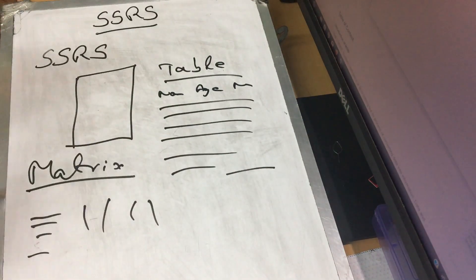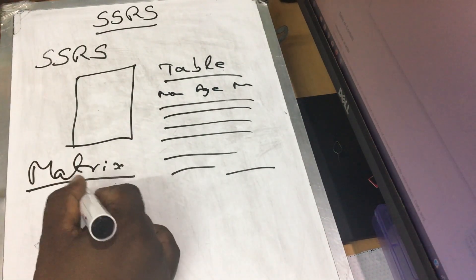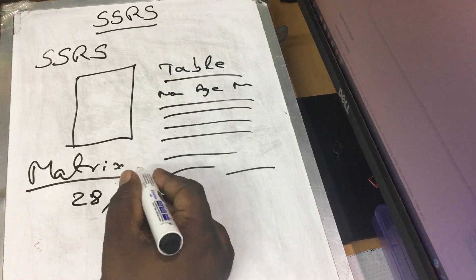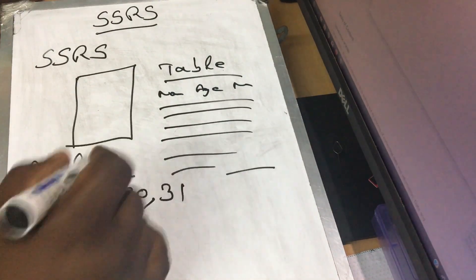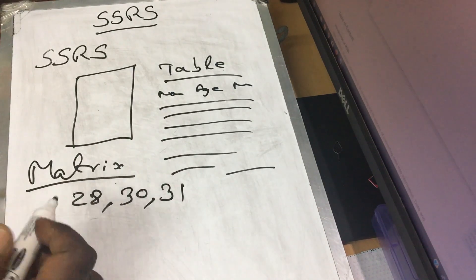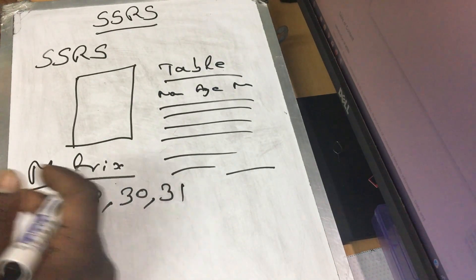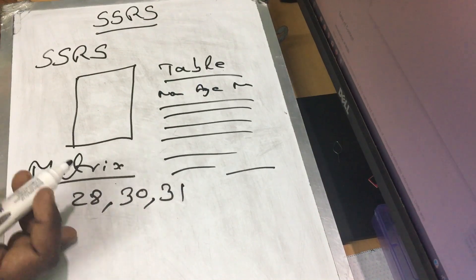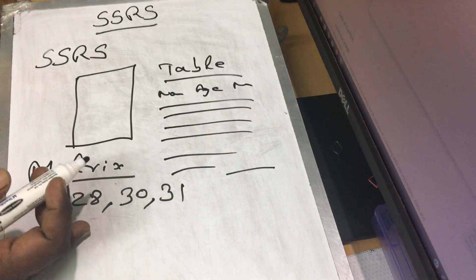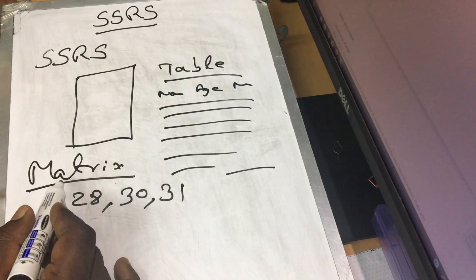For example, with a calendar — say we have data for 2030 in the calendar. The calendar columns are not fixed and do not increase by a set degree, so I will use the matrix report for that.